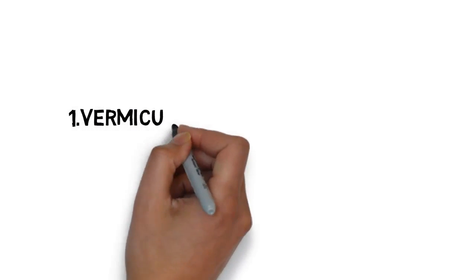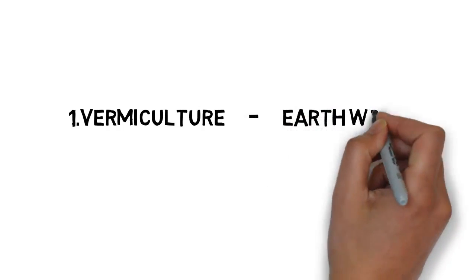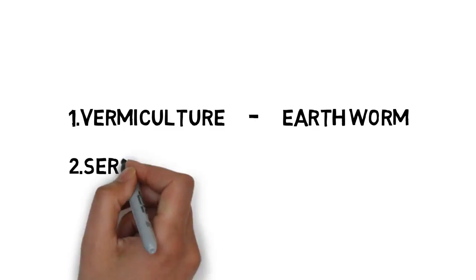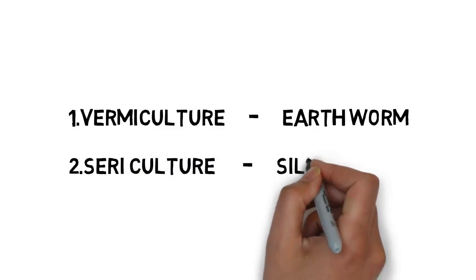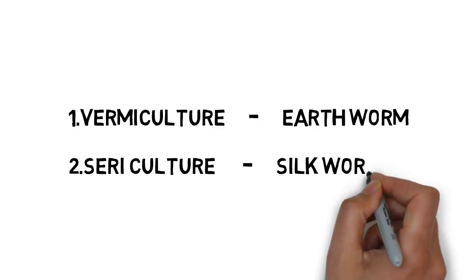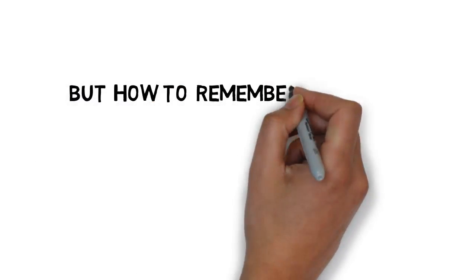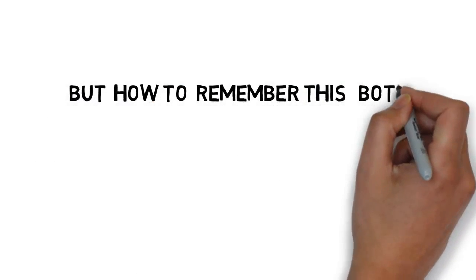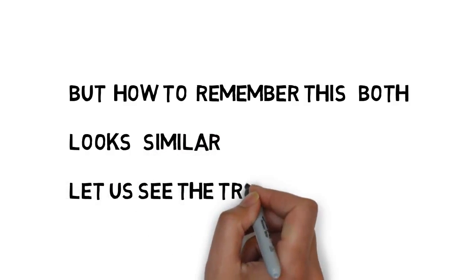The first branch is vermiculture, which is related to earthworm. The second one is sericulture, related to silkworm. Both look similar and both relate to the worm family, so you will surely get confused. We will make a trick to remember this — both look similar, so let us see the trick.